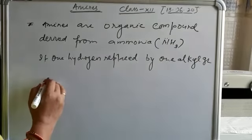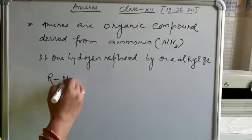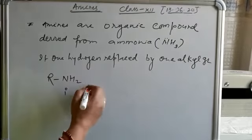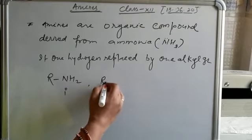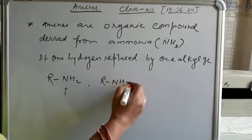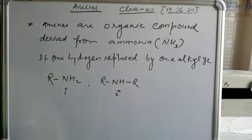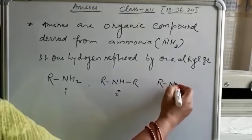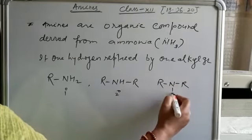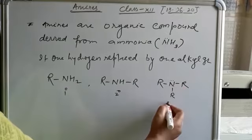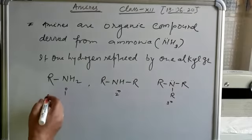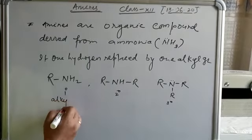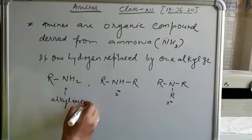So, see here — now we get a one-degree amine. Similarly, if two hydrogens are replaced by two alkyl groups, this is known as a two-degree amine. If all three hydrogens are replaced by three alkyl groups, it is known as a three-degree amine. This is known as alkyl amine.